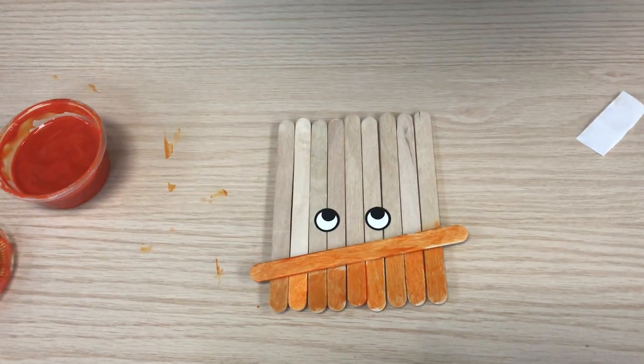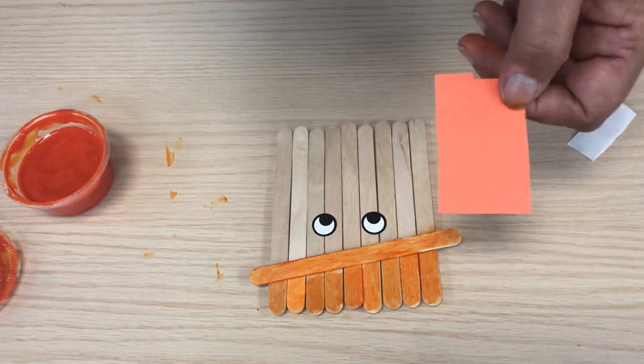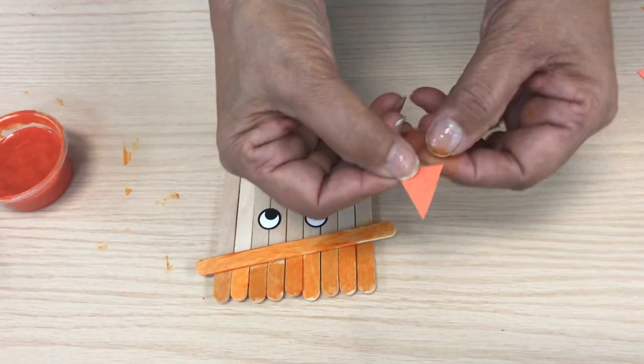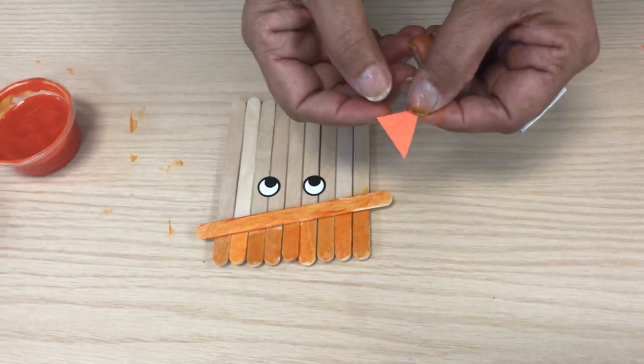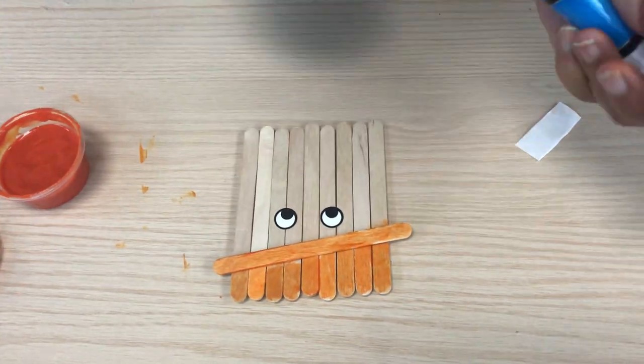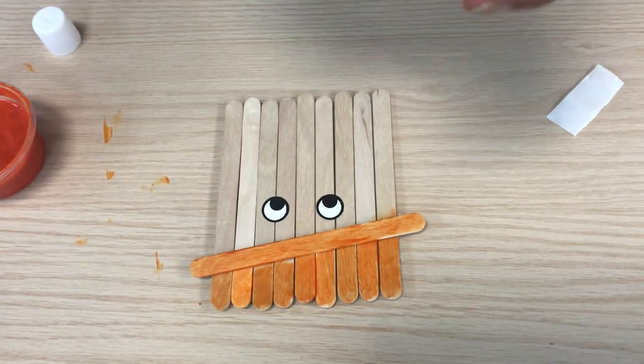After that, you take your orange paper and you want to cut a nose, a triangle shape. Van a cortar un triángulo anaranjado de papel y lo vamos a pegar para que sea la nariz de nuestro espantapájaros.